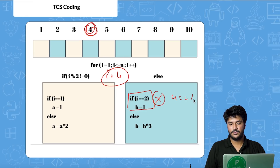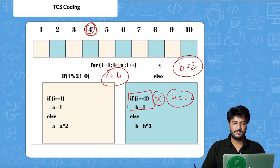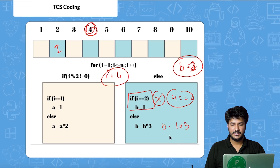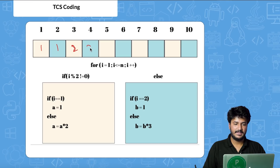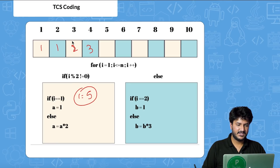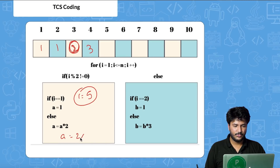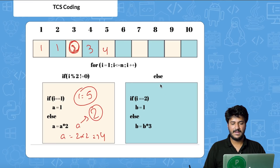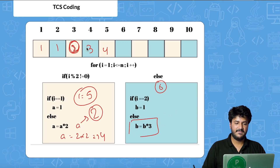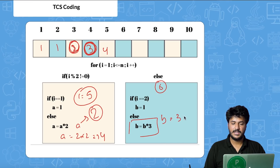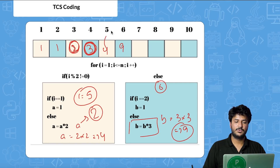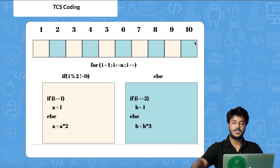Continuing: when i = 5, a = 2 * 2 = 4; when i = 6, b = 3 * 3 = 9; then 8, then 27, then 16, then 81, and so on. Now I'll show you the code in C — the logic remains the same. For C++, Python, Perl, and Java, the links are in the description below.